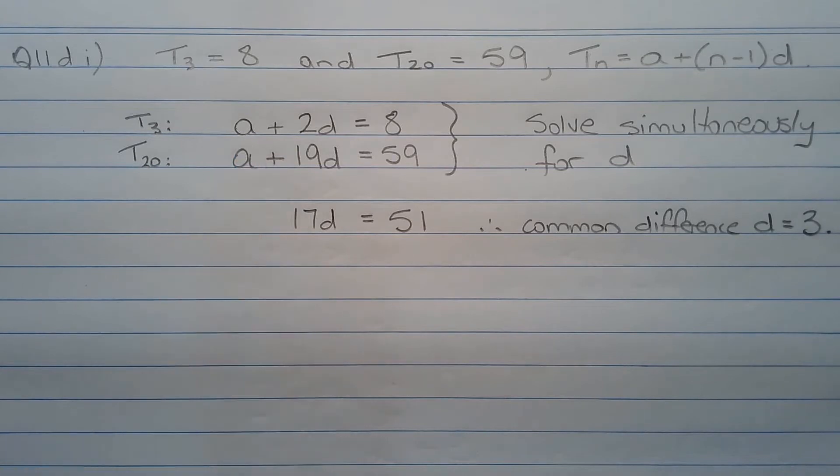Now a minus a equals 0. 19d minus 2d equals 17d. And 59 minus 8 equals 51. So dividing both sides by 17, we get the common difference d equals 3.